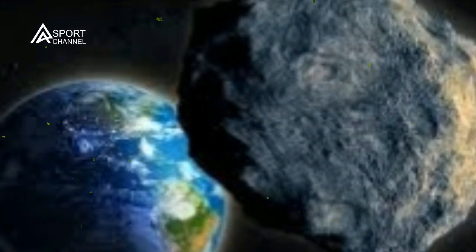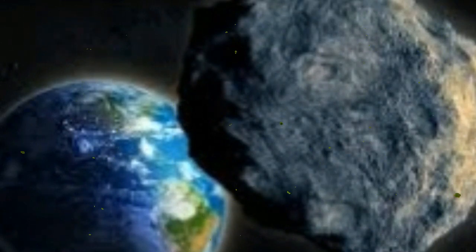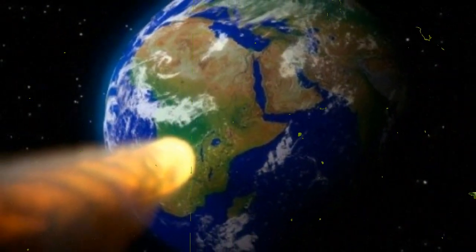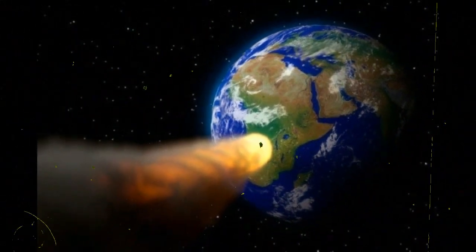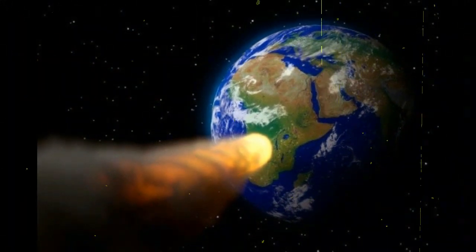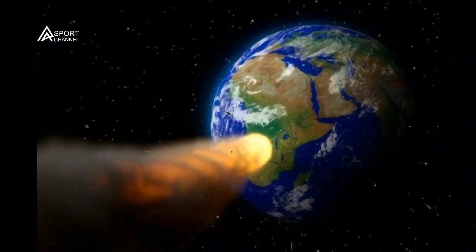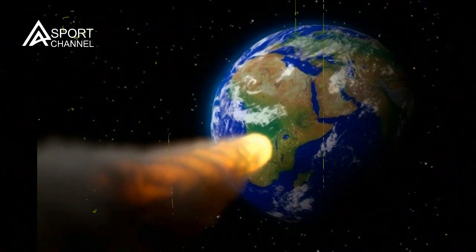But with a diameter of just 6.6 feet (2 meters), UA1 was too small to pose a threat. Even if it had struck Earth, most of its rocky body would have burned away in the atmosphere before it could hit the ground, CNET reported.